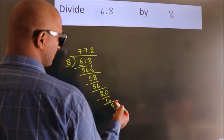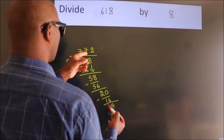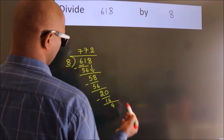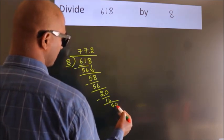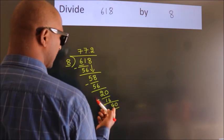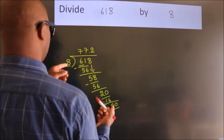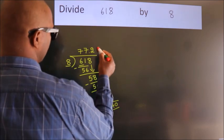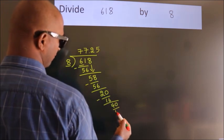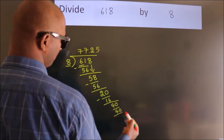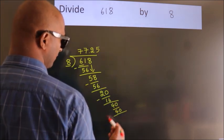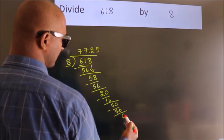After this, we already have the decimal. So directly take 0. So 40. When do we get 40 in the 8 table? 8 times 5 is 40. Now we subtract. We get 0.